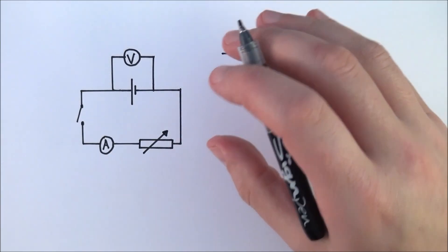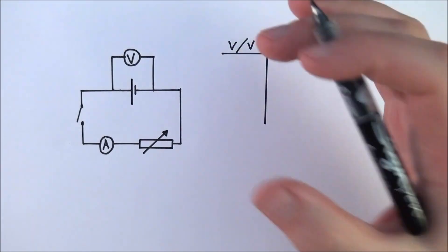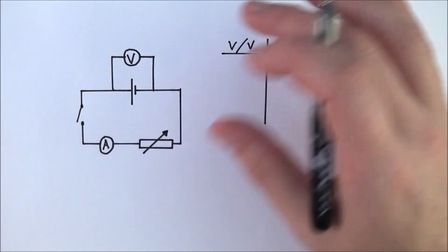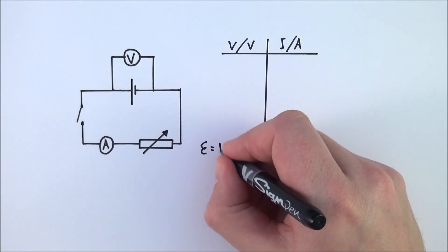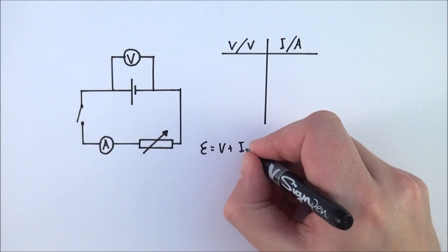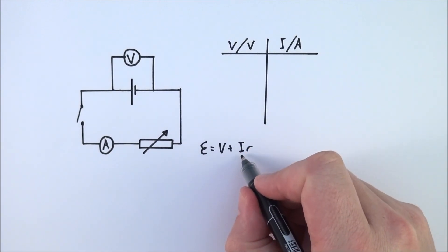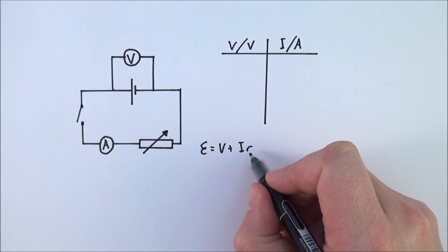What you can then do is think about the equation. The equation for internal resistance and how that links to EMF is that EMF is equal to the potential difference plus Ir, where I is the current in that circuit and little r is our internal resistance.